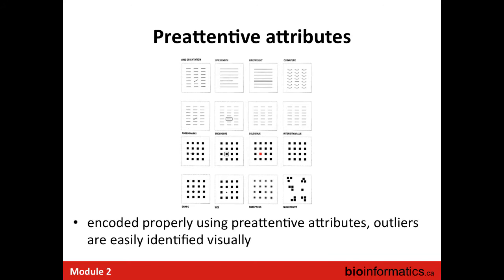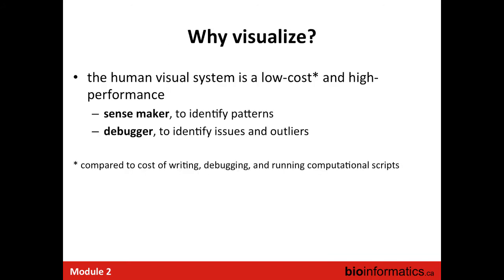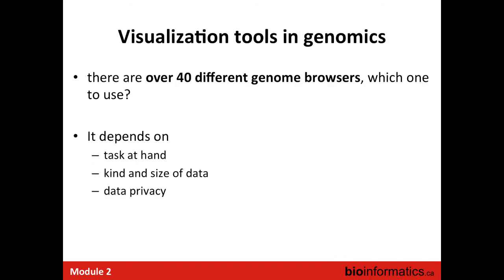The idea is to display your data in the best way so you can catch outliers. We can claim that the visual system is a low-cost, high-performance sense marker and debugger to identify outliers, as long as you display it properly. We're going to use tools to display the sequencing data you're working on. There are a lot of different genome browsers — over 40 are available. Which one you want to use depends on the task, what kind of data you have, the size of your dataset, and any privacy issues — whether you have to work locally or can put data on the cloud.